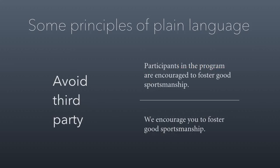Another thing to avoid is third party as much as possible. Anytime you're communicating directly to or on behalf of an organization, you should be using first and second party rather than third party. Third party is when you talk about somebody. First party is the communicator. Second party is the audience of the communication. So here, the top example says 'participants in the program are encouraged to foster good sportsmanship.' There you have a third party reference as though you're talking about some other group of participants. But the reality is this is written to the people who would be in the program — they're the second party. They're not being addressed as the second party, though. So you see we improve it by simply saying 'we encourage you to foster good sportsmanship.'